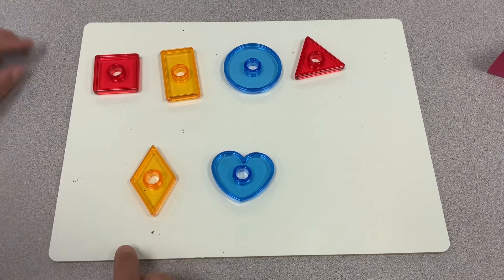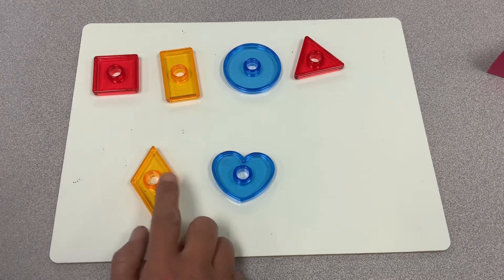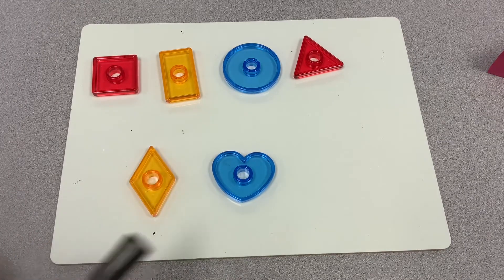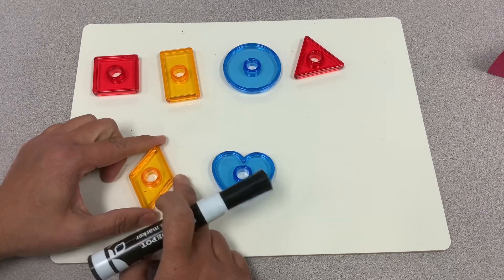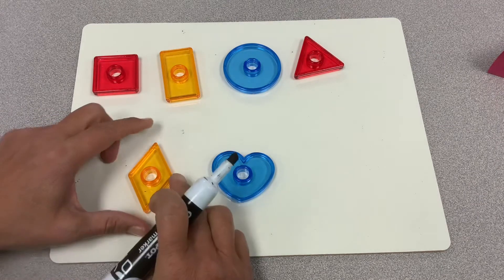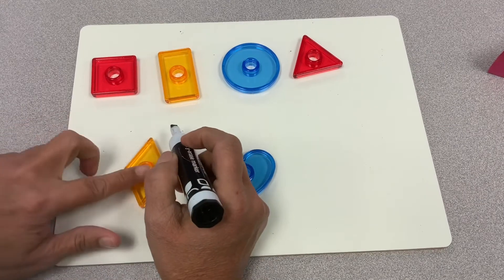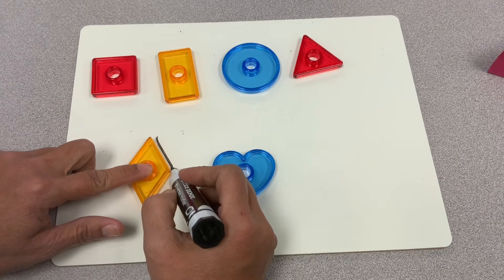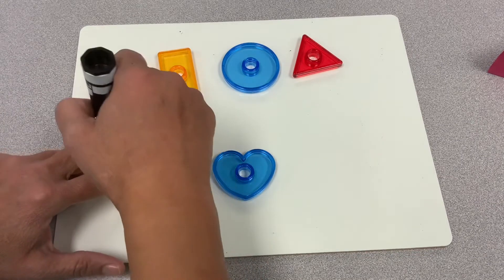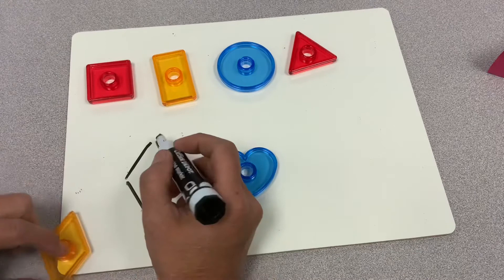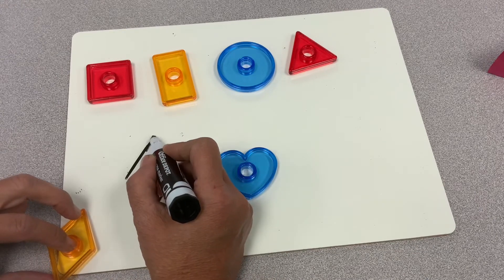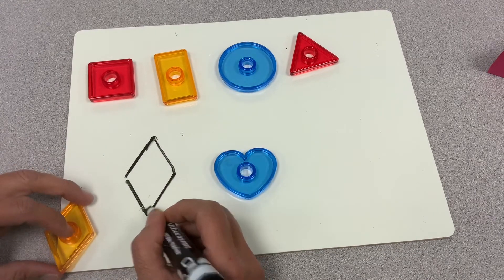And a diamond has four sides that are the same, but two very pointy corners here. The other corners are a lot more flatter than the square, and it's always up. So they have two pointy corners, one on the top and one on the bottom.